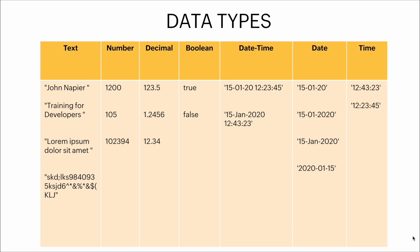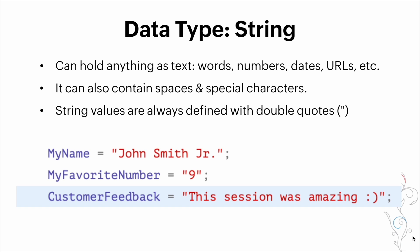Here's a table showing you some of the data types. Here's some examples of the data type string. It can hold anything as text like words, numbers, dates, URLs. It can also contain spaces and special characters. These string data types are always defined with double quotes as shown in the example below. Here are some fields with string data types: names, emails, address, phone, single line, and others.